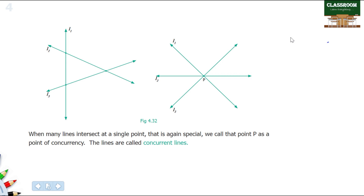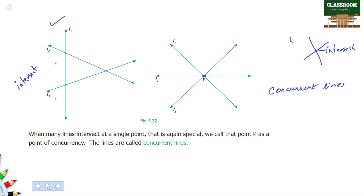In this class we call it intersecting lines. In this example, L1, L2, L3 — if many lines intersect at one point, we represent these as concurrent lines. This point is called the point of concurrency.